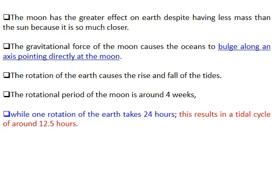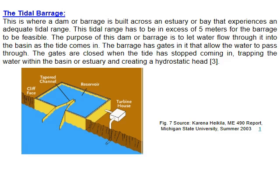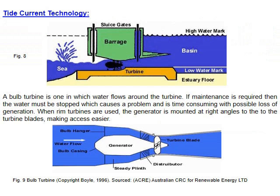A reservoir captures the incoming tidal water. Later, it is released through a separate path containing a turbo-generator, and the water returns to the sea. The tidal turbine rotates both when water flows in and when it flows back out.